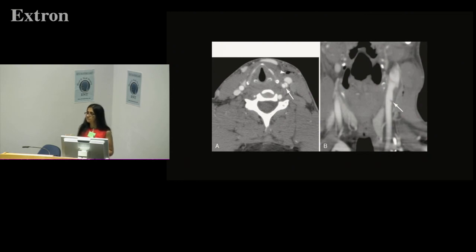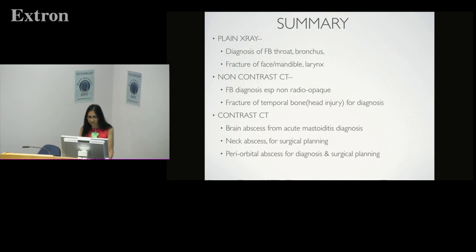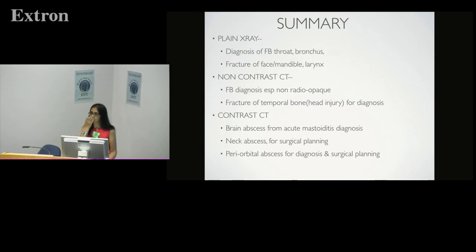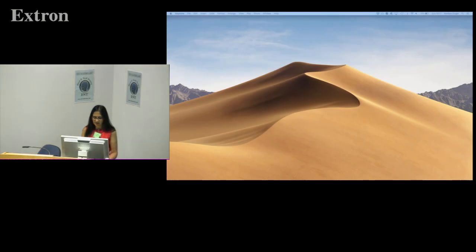In summary, radiology can help ENT emergencies with foreign body detection, infection, and trauma as we discussed. Plain films are used for screening of foreign body in throat and bronchus, and for fractures of face and mandible. If in doubt, always proceed to a non-contrast CT for foreign body and fracture diagnosis. For the diagnosis of brain, periorbital, or neck abscesses, you should request a contrast CT, because contrast enhancement around infection helps localise an abscess collection.